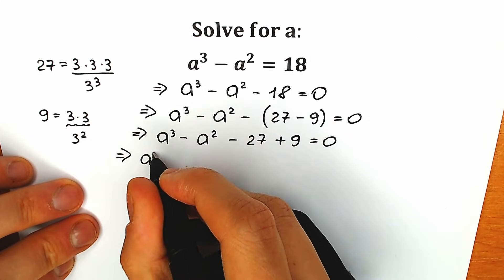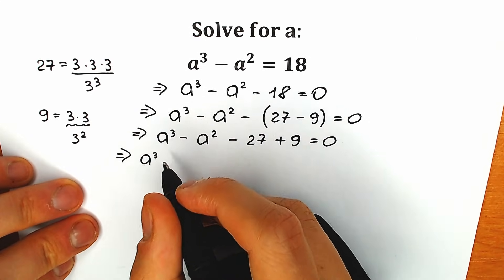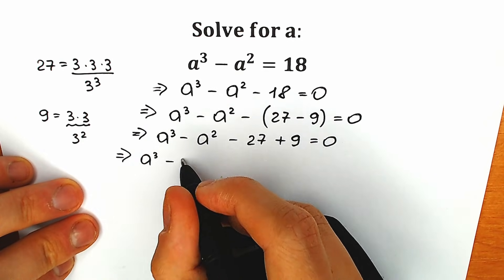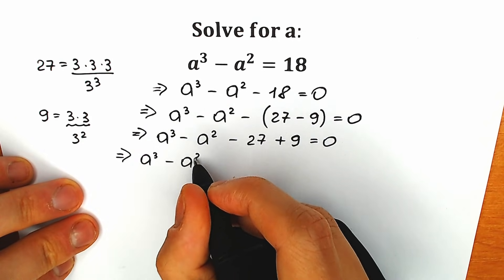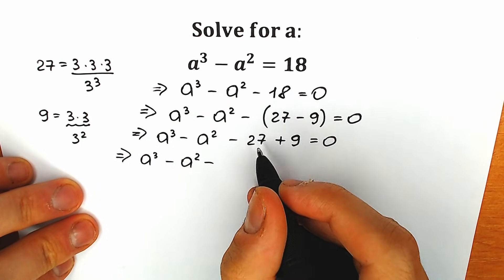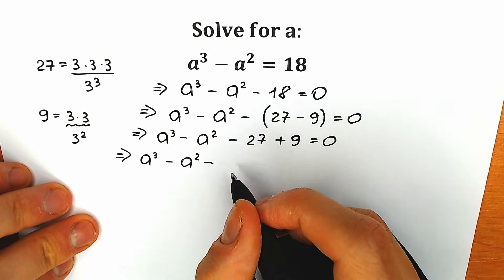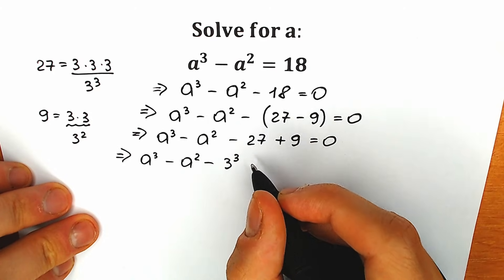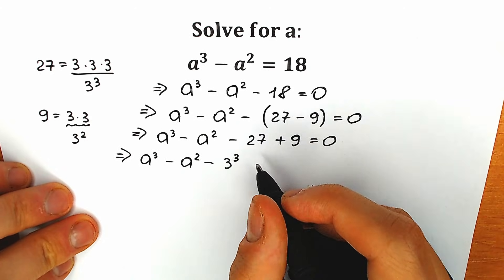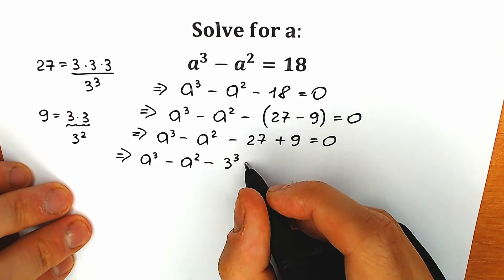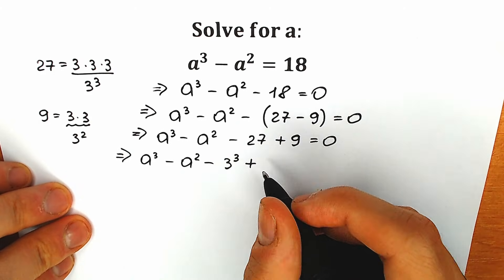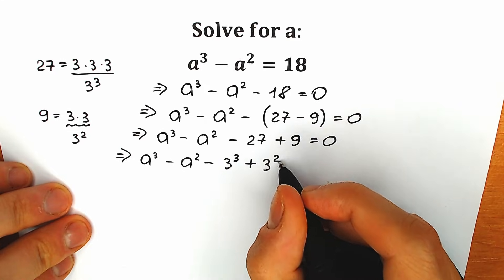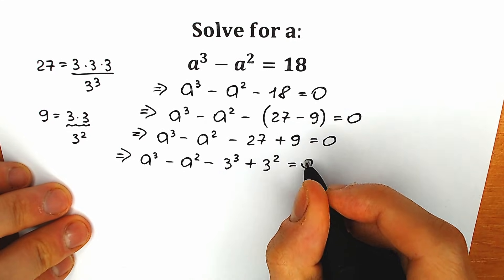So we have a³ minus a² minus 3³ plus 3², equal to zero.